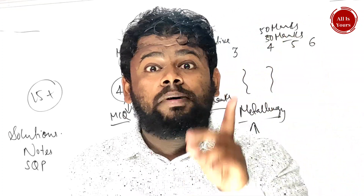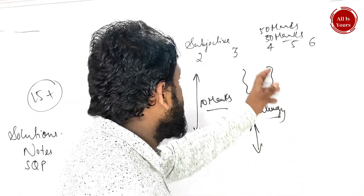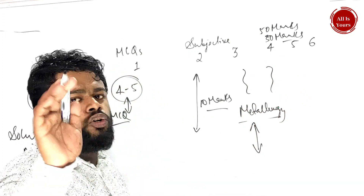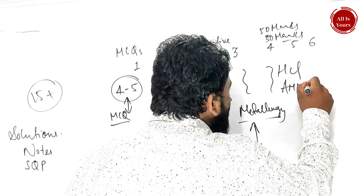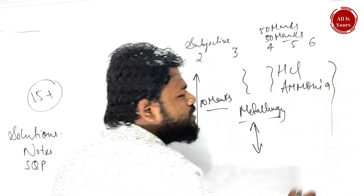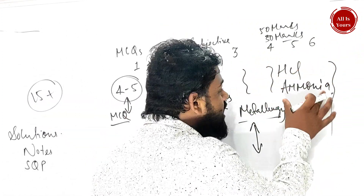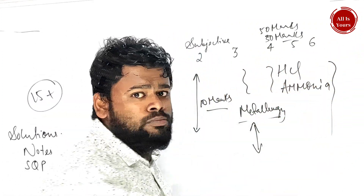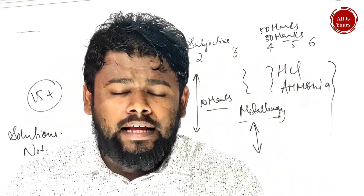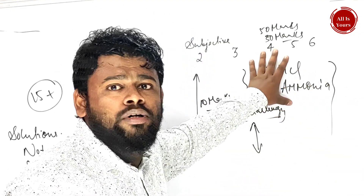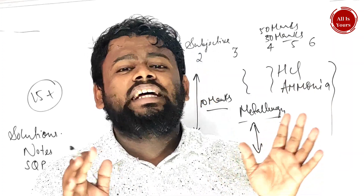If you are a very good student, you have to read only HCl or ammonia — or if you are a very good student, you can read only HCl, ammonia, H2SO4, and HNO3. Both of you — your priority should be to read HCl and ammonia, as well as H2SO4 and HNO3.